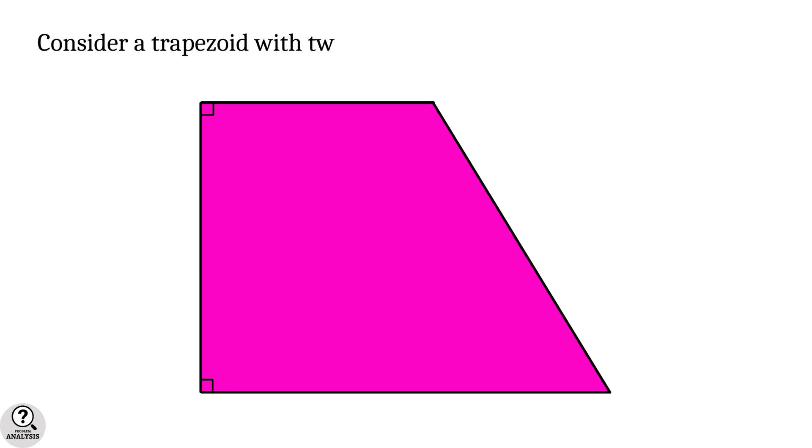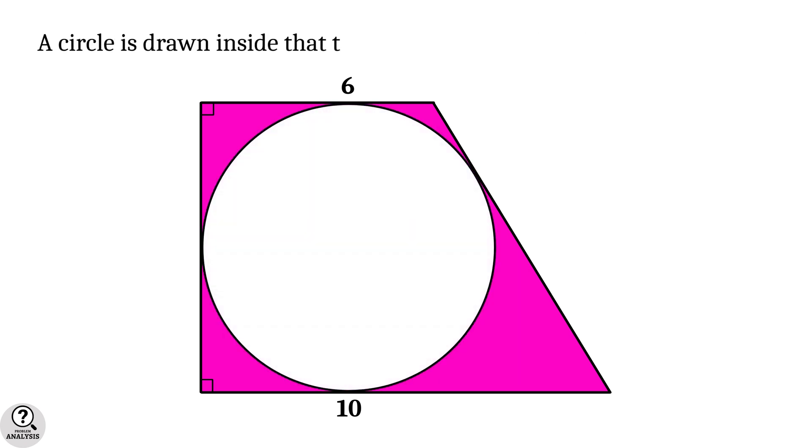Consider a trapezoid with two right angle corners. The lengths of the parallel sides are given as 6 and 10 units. Now a circle is drawn inside that touches all the edges of the trapezoid. Then my problem is what is the radius of this circle?